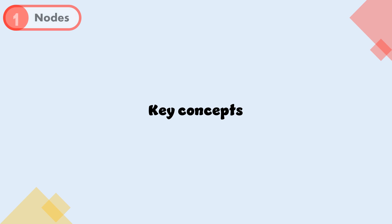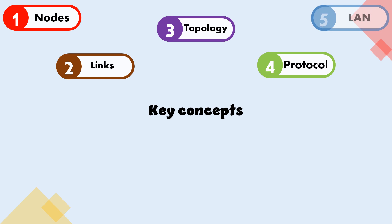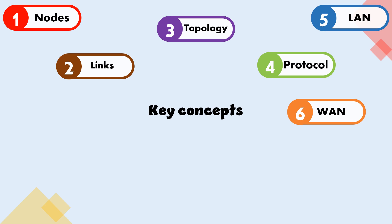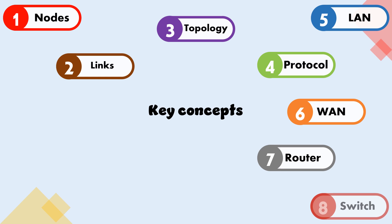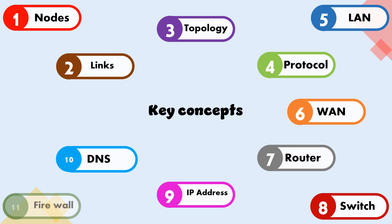Here are some key concepts related to computer networks: Nodes, Links, Topology, Protocols, LAN, WAN, Router, Switch, IP Address, DNS, Firewall, and VPN.